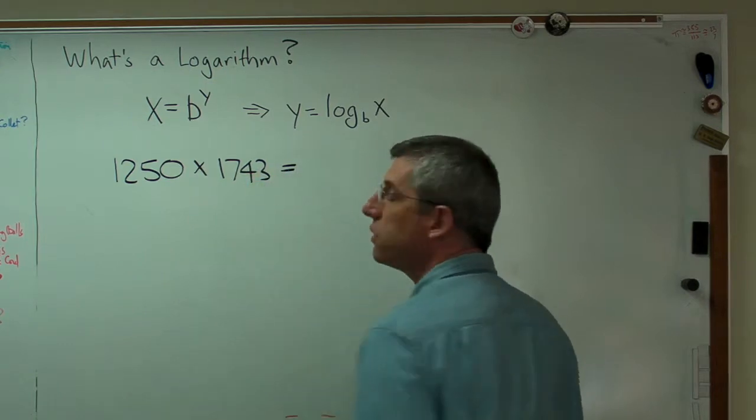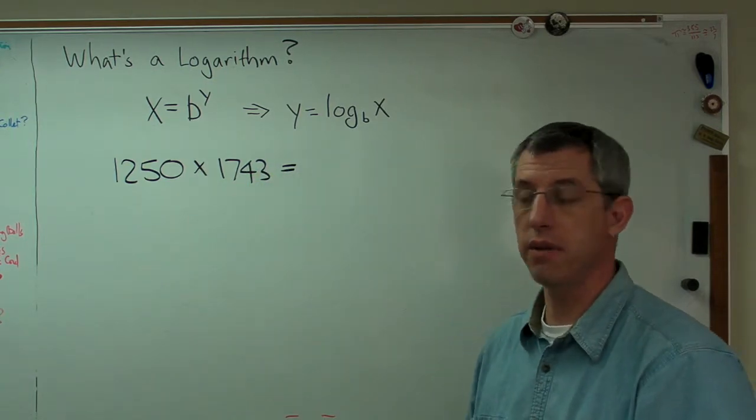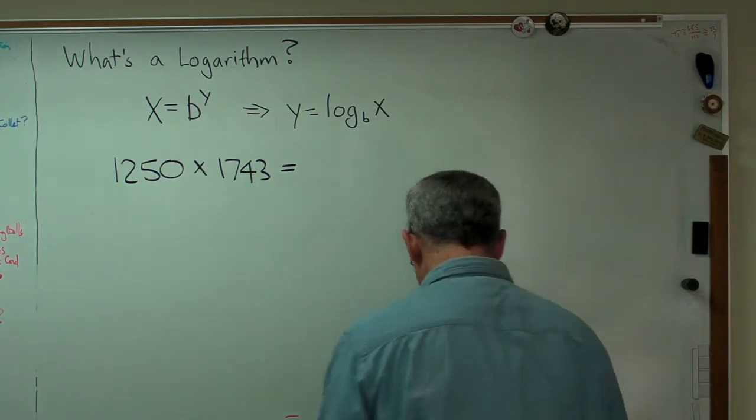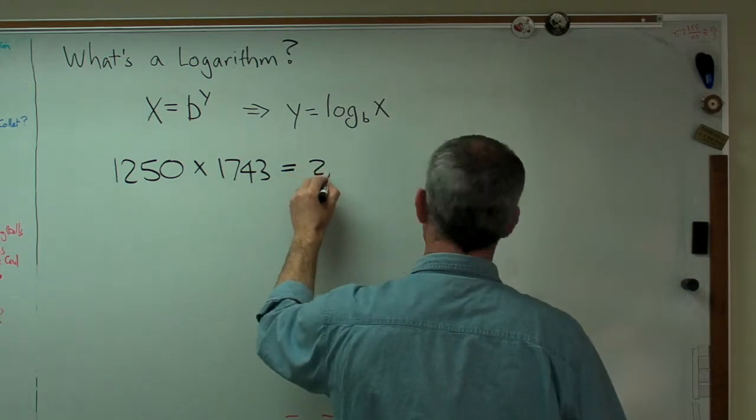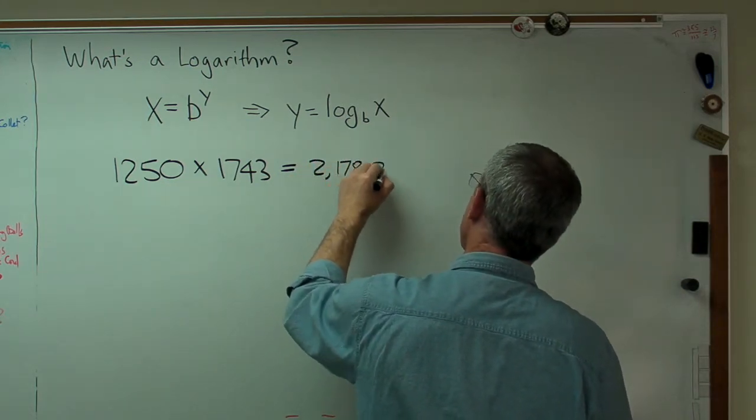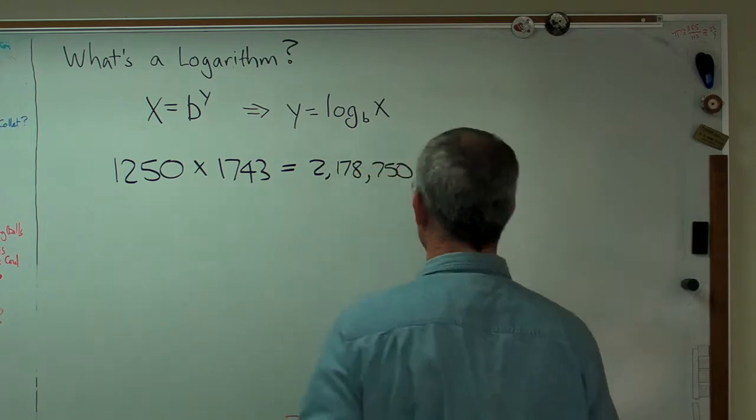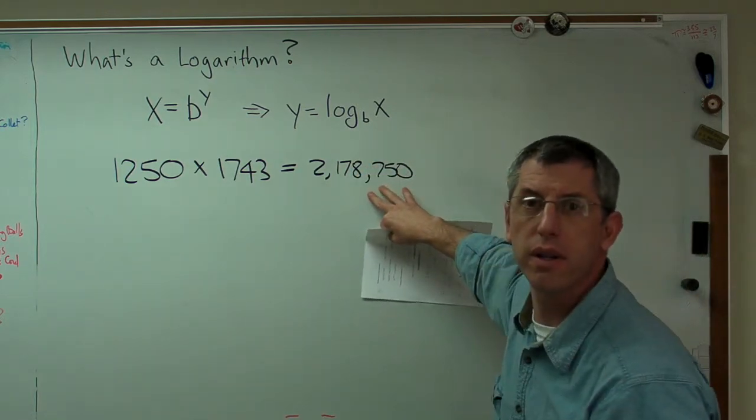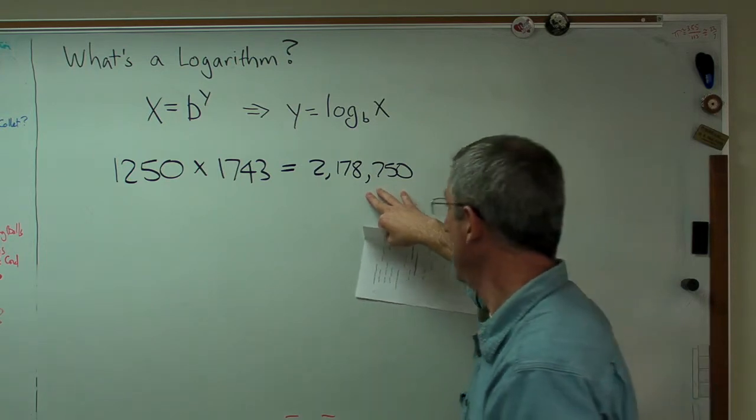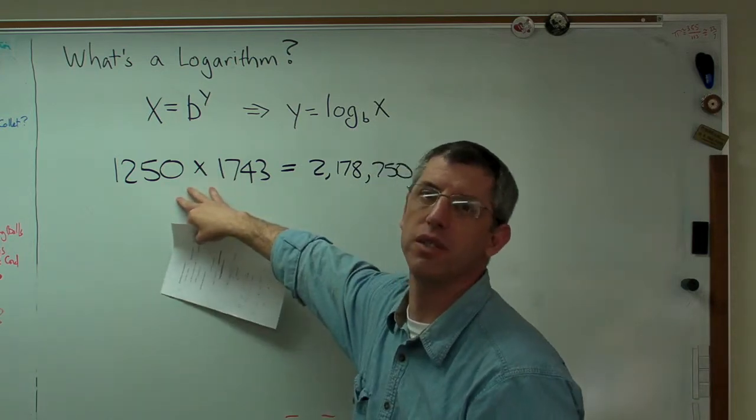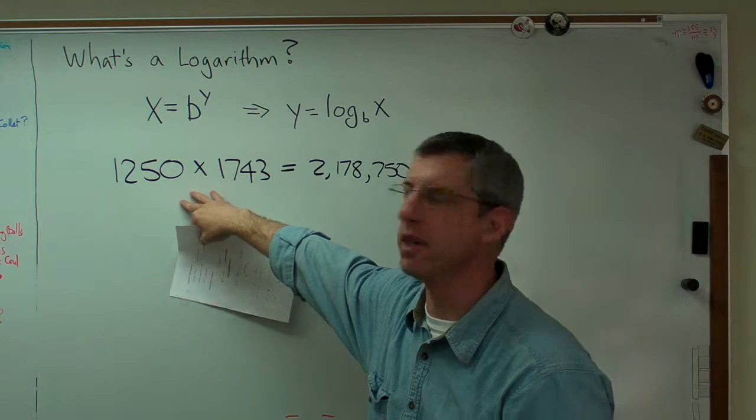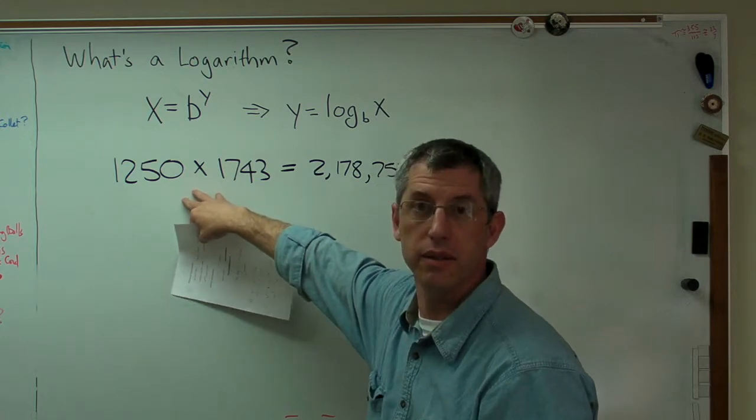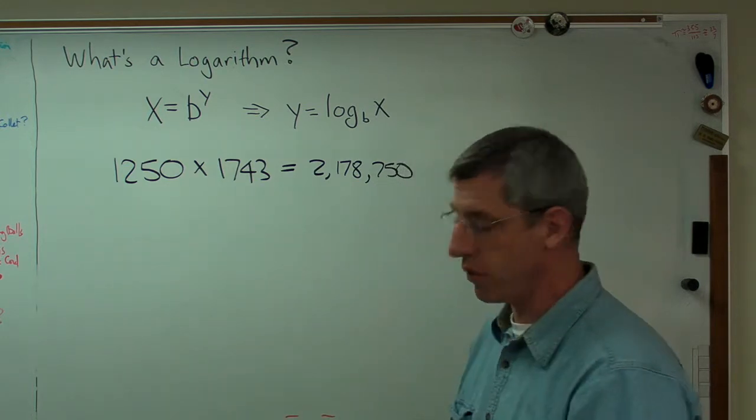If you multiply 1250 by 1743, you get 2,178,750. Is that right? Yeah, I got that right. So this is trivial if you've got a calculator. If you don't have a calculator, it takes a while, it takes time. It's not terribly hard, but it's tedious. And time is worth something here.